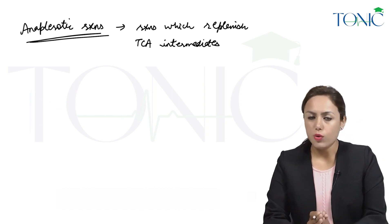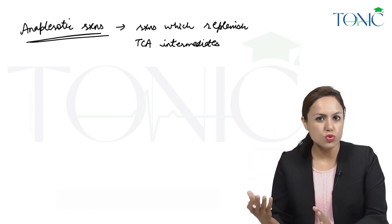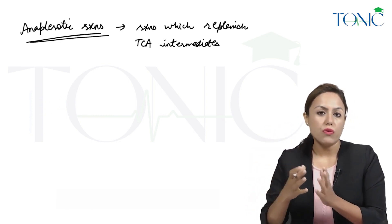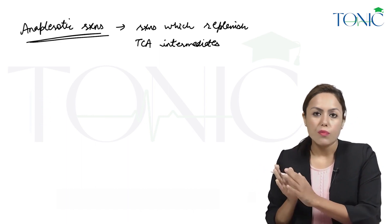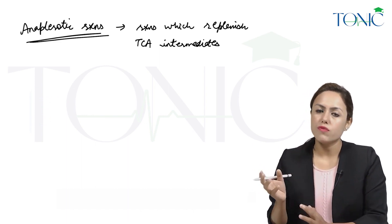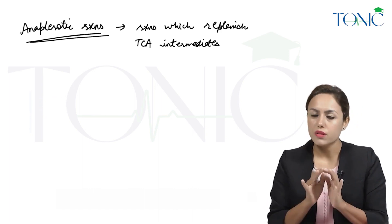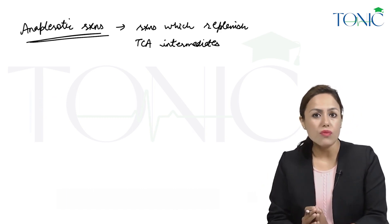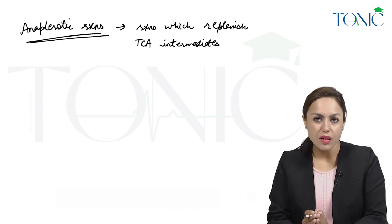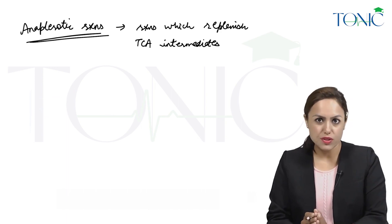The anabolic role of TCA means TCA intermediates are getting used up. If they are getting used up, they are getting finished. So there must be some reactions which are again making TCA intermediates, so that a constant level of TCA cycle is always maintained in the cells. These reactions that are needed are anaplerotic reactions, which again replenish TCA intermediates.